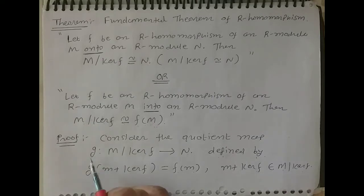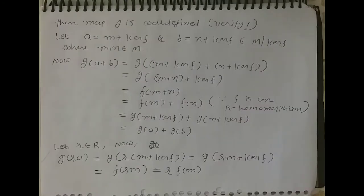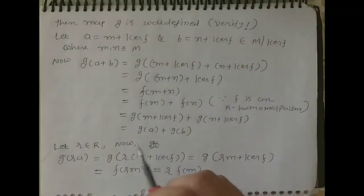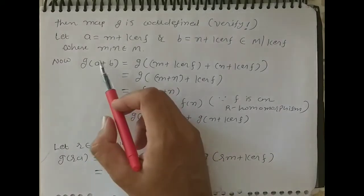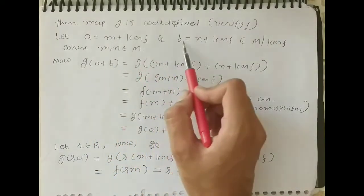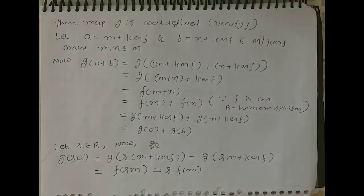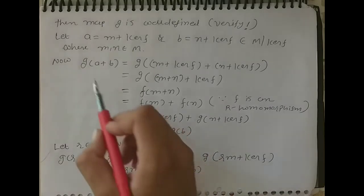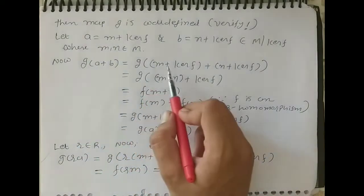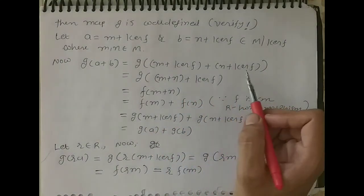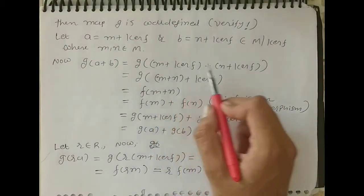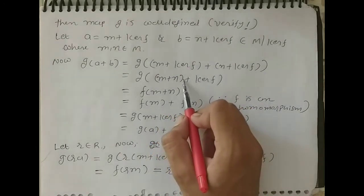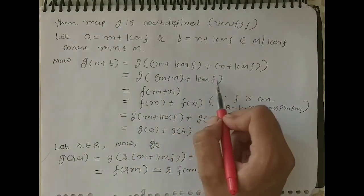First we show that this map G is an R-homomorphism. The given map G is well-defined — this verification is up to you to check. Now, to show G is an R-homomorphism, let us consider two elements: A equals M plus kernel of F, and B equals N plus kernel of F, belonging to M quotient kernel of F, where M and N belong to R-module M.